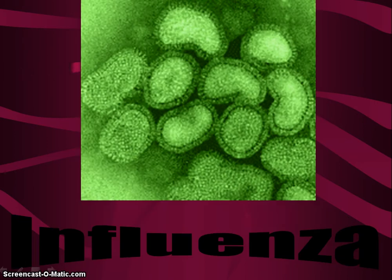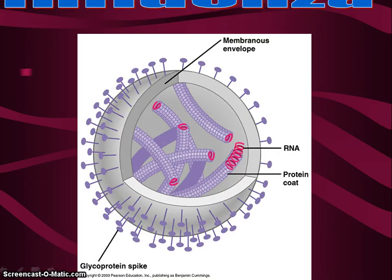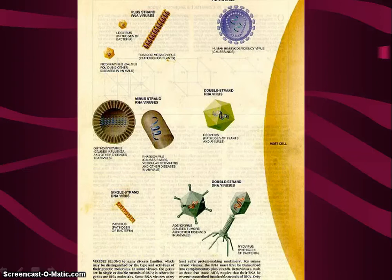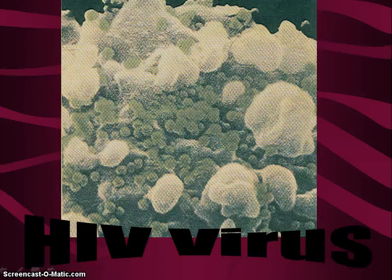It was first discovered in 1883 by a German scientist seeking the cause of the tobacco mosaic disease. The tobacco mosaic disease stunts the growth of tobacco plants and gives their leaves a mosaic colorization. A scientist discovered it was contagious and thought it was bacterial.